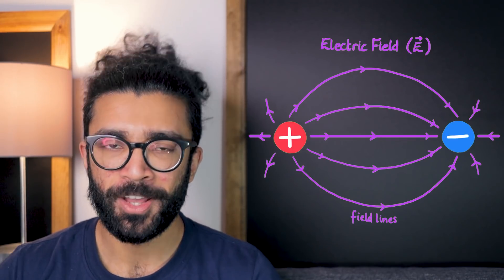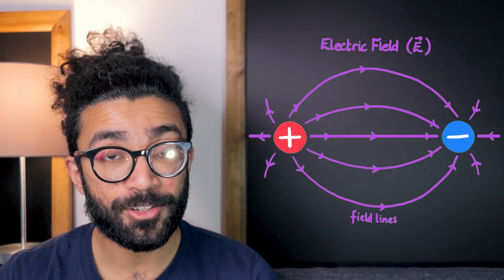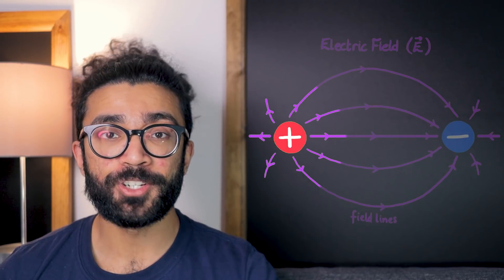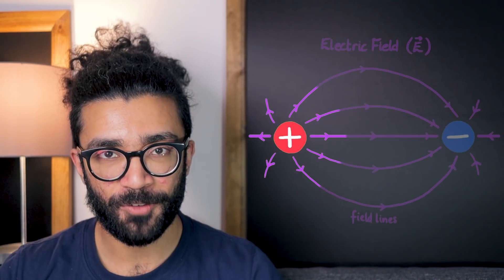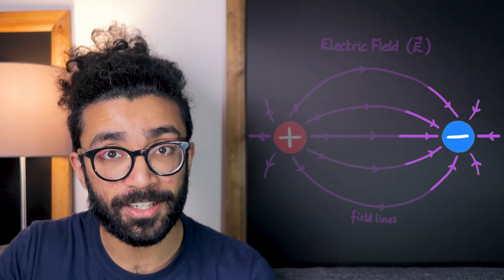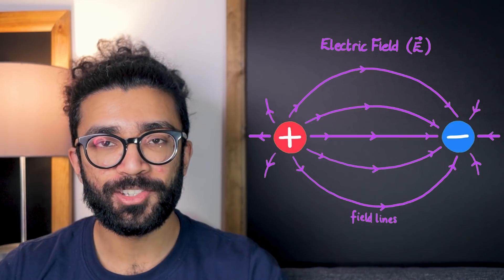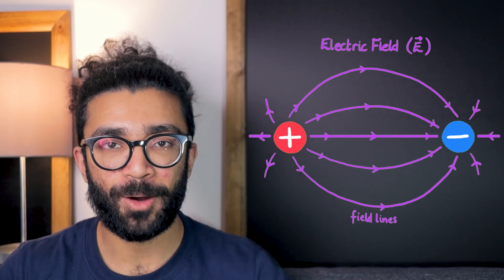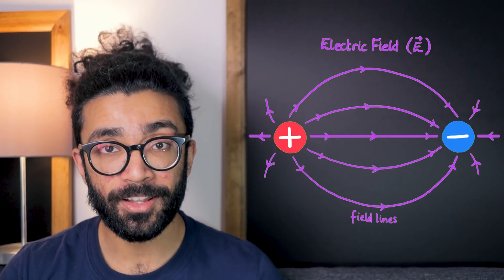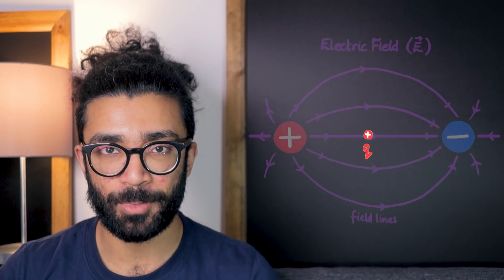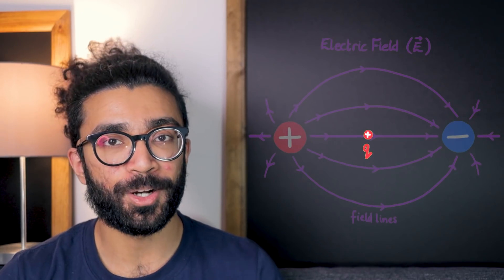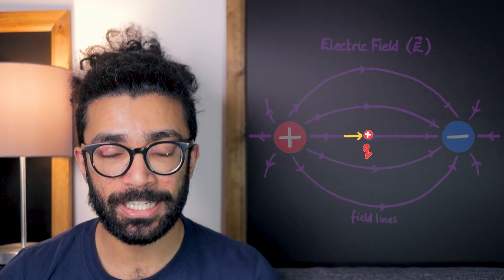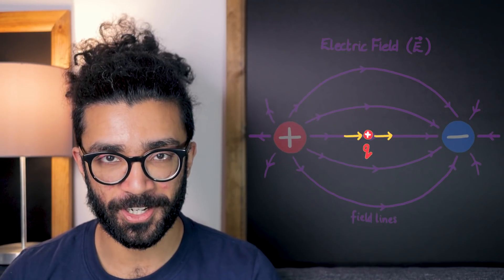So let's start with electric fields. Positive charges are said to be the source of electric fields, and negative charges are said to be the sink of electric fields. The lines we see drawn here in purple are known as electric field lines, and they tell us something about what would happen if we placed another small positively charged particle in this region of space. It would be pushed away from the large positive charge following the direction of the electric field line, and it would also be attracted toward the large negative charge.